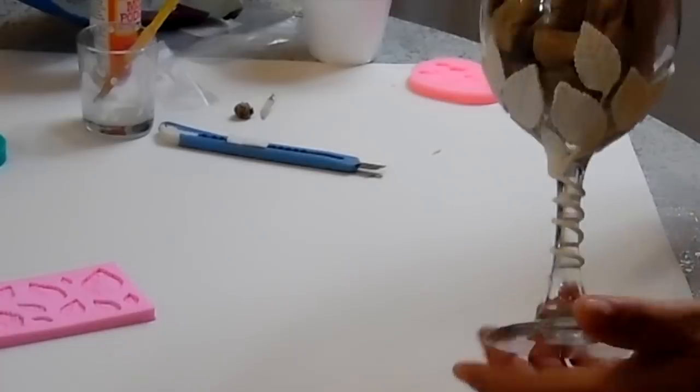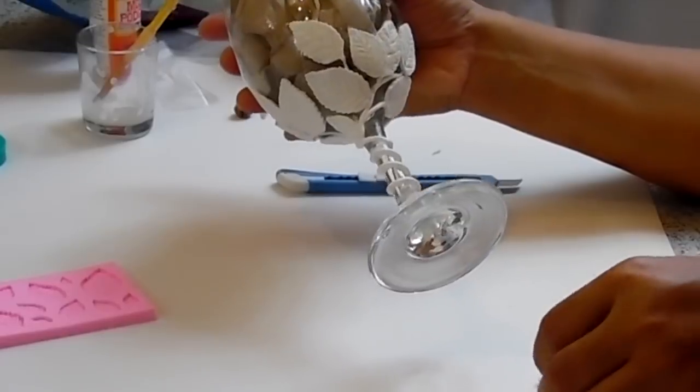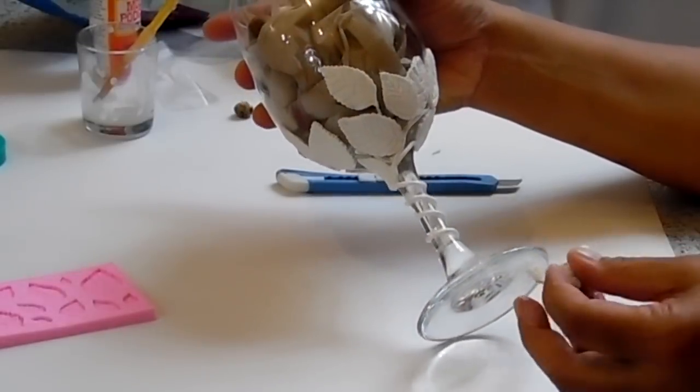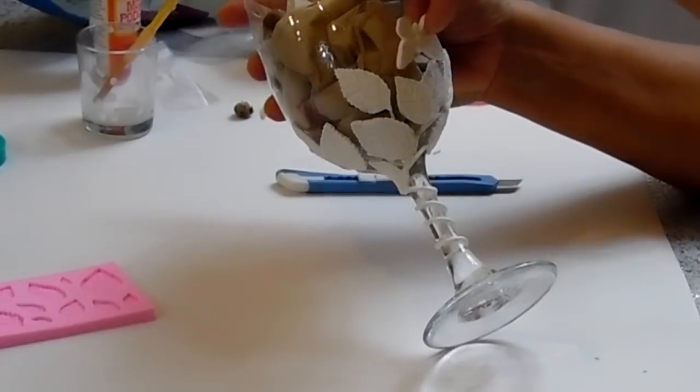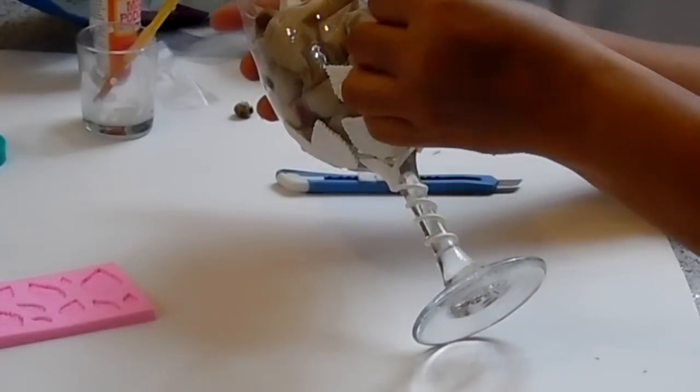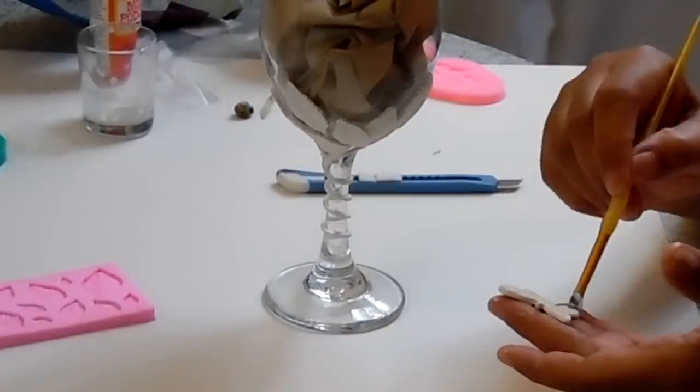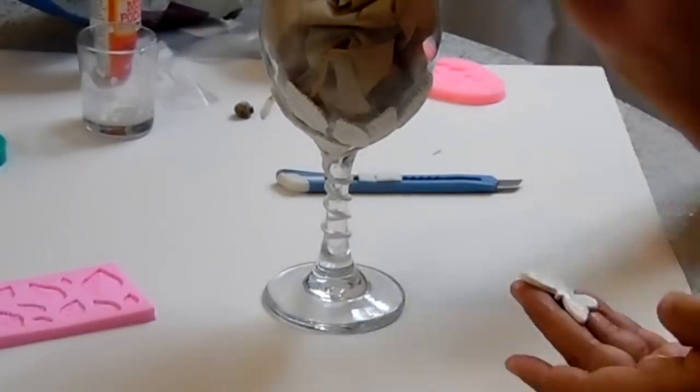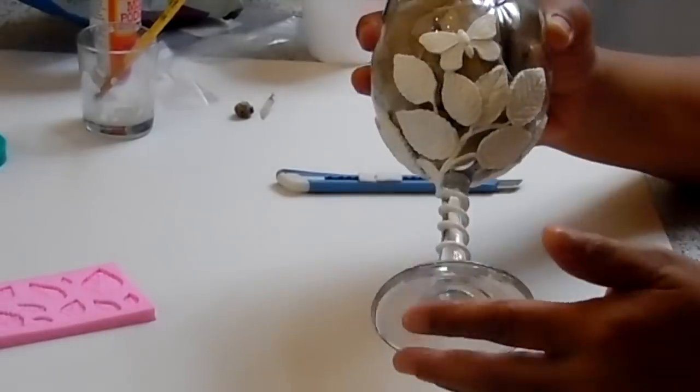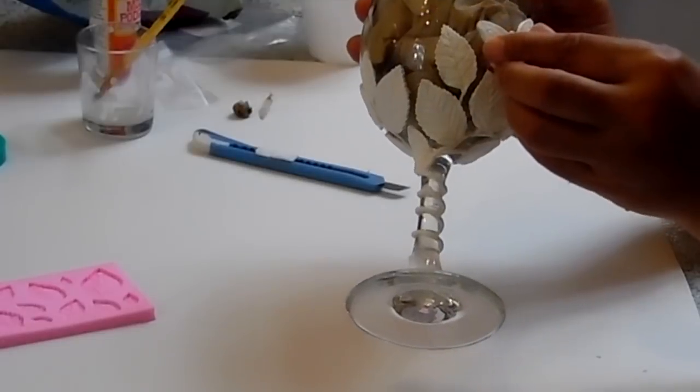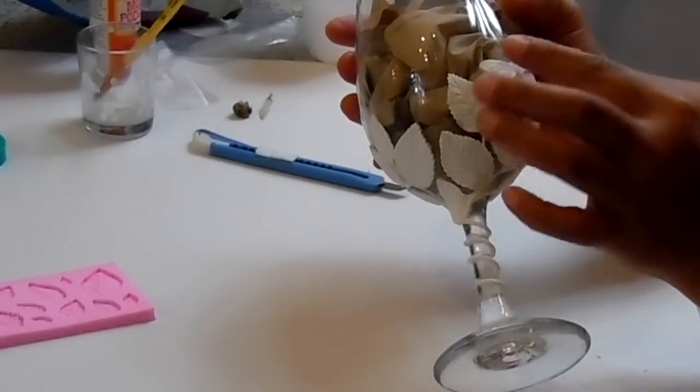The next thing I'll do is add my butterflies and roses. Take your butterfly or rose and figure out where you want it on the glass. Add Mod Podge and then attach it to the glass. Make sure that the butterfly is making full contact with the glass.